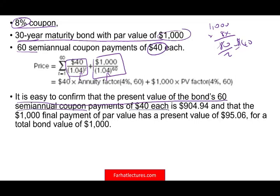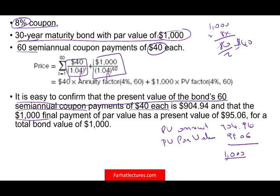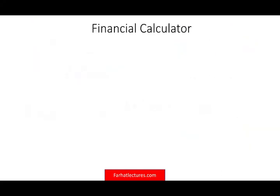So it's easy to confirm that the present value of the bond — 60 semiannual payments of $40 — gives a present value of the annuity of $904.94, and the present value of the $1,000 payment 30 years from now is $95.06, which in total gives a bond value of $1,000.